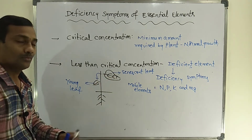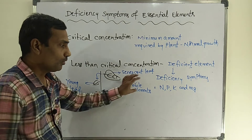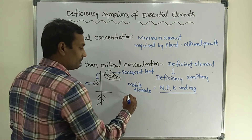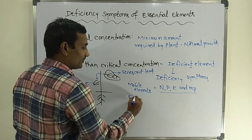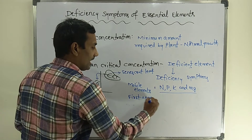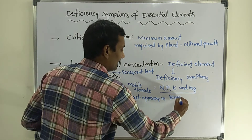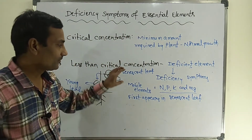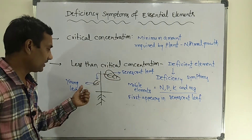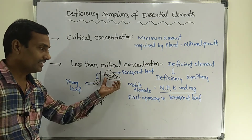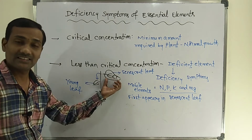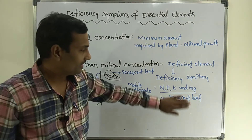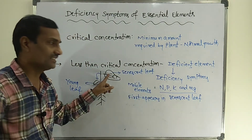Whatever mineral elements are found in the senescent leaf — that is, the old leaf — they consist of mobile elements like nitrogen, phosphorus, potassium, and magnesium. All these mineral elements are exported to the young or developing leaf. The plant does not waste these mineral elements. Because all these elements are exported to the young leaf, deficiency occurs in the senescent leaf first. So the mobile elements' symptoms first appear in the senescent leaf.